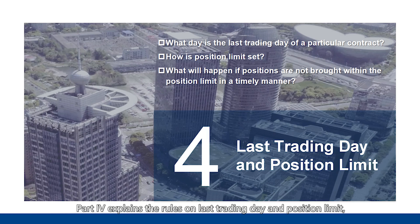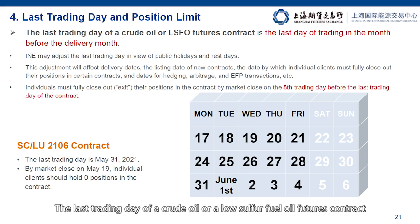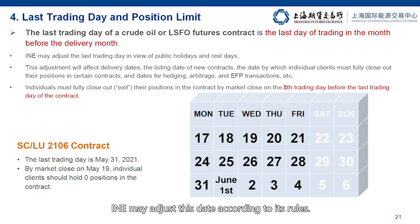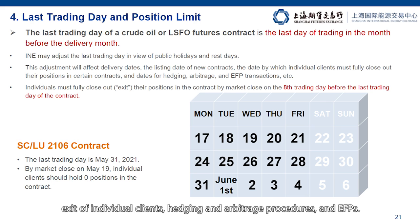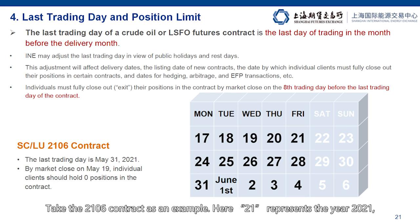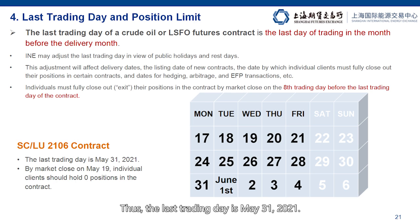Part four explains the rules on last trading day and position limit, and the consequences of failing to reduce open positions within the position limit in time. The last trading day of a crude oil or low sulfur fuel oil futures contract is the last day of trading of the month before the delivery month. INE may adjust this date according to its rules. If the date is adjusted, it may affect the timing for the listing of new contracts, exit of individual clients, hedging and arbitrage procedures, and EFPs. Take the 2106 contract as an example: here 21 represents the year 2021 and 06 the month of June, so 2106 means the contract with the delivery month of June 2021. Thus, the last trading day is May 31, 2021.